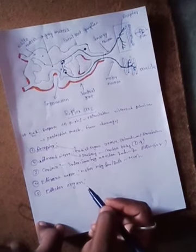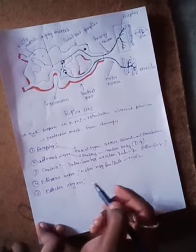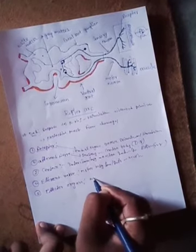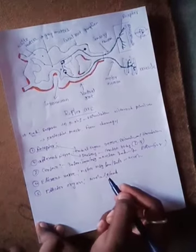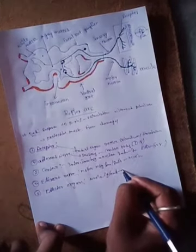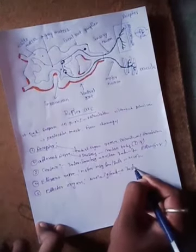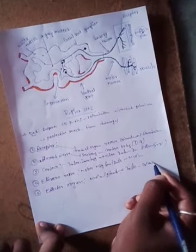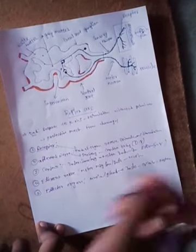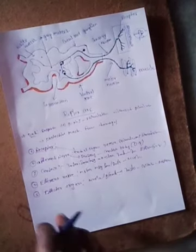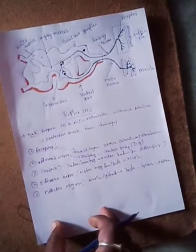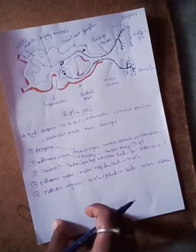The effector organ is a structure such as a muscle or gland. It collects information from the motor neurons and shows the physical activity against the receptor activity. This is about the reflex arc, its definition, and types.